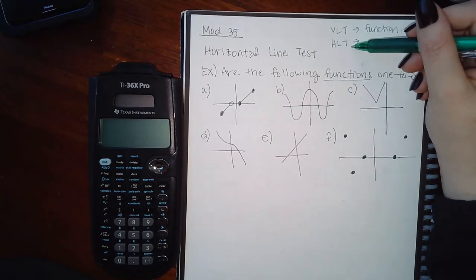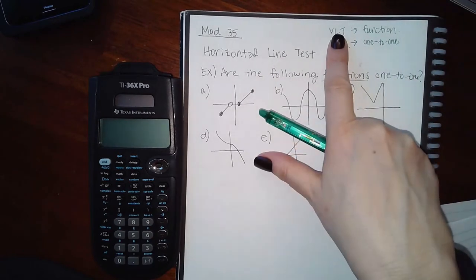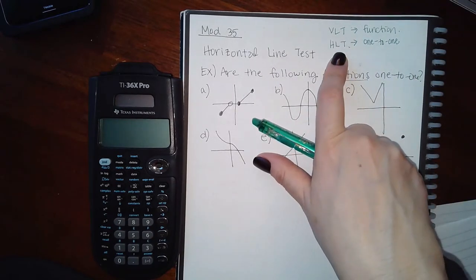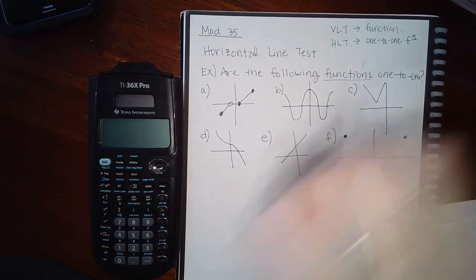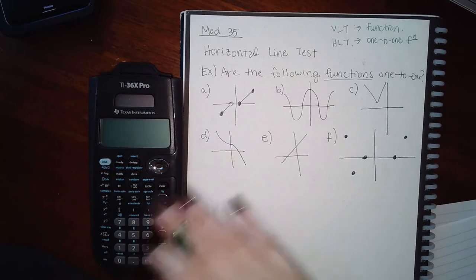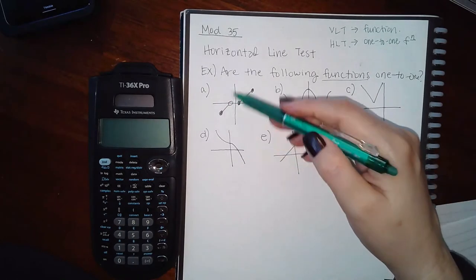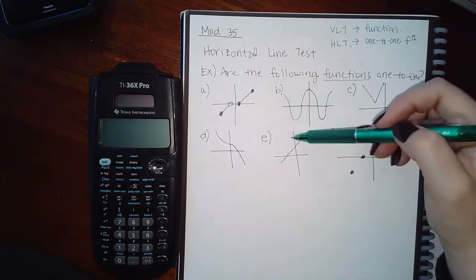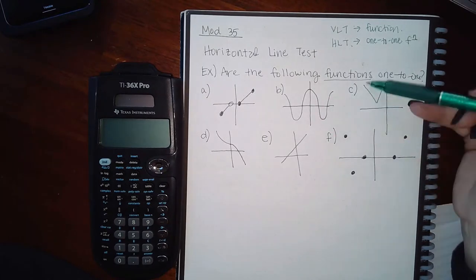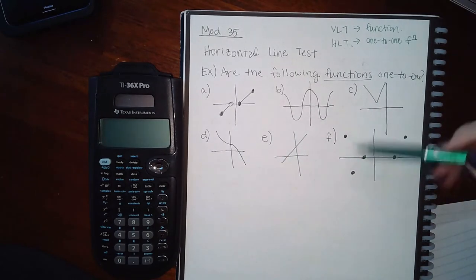Then do the horizontal line test. The horizontal line test tells you whether or not the function is one-to-one. If you haven't passed the vertical line test, there's no need to do the horizontal line test. Since the description says 'are the following functions one-to-one,' they've already established they are functions. If you visually apply a vertical line test, you'll notice that no matter how many vertical lines you imagine, they only cross those graphs one time.